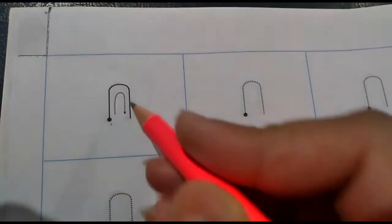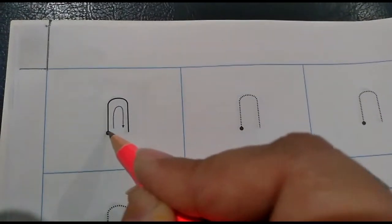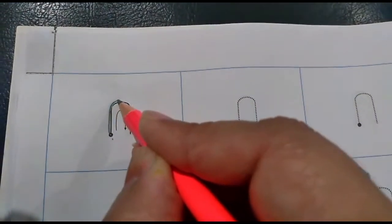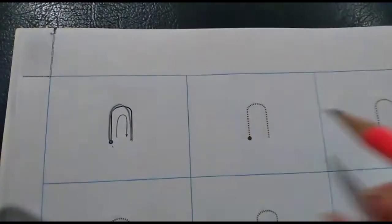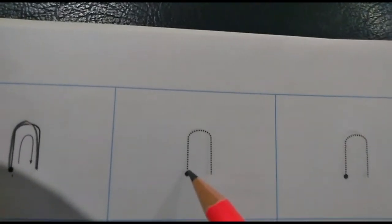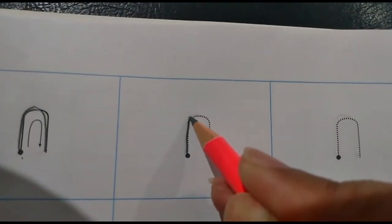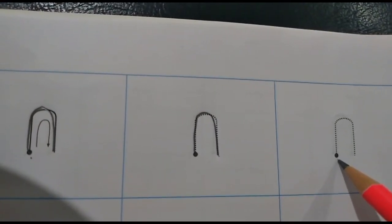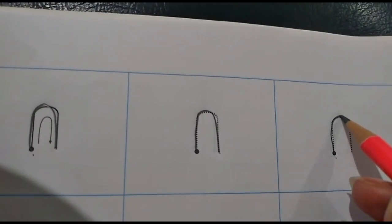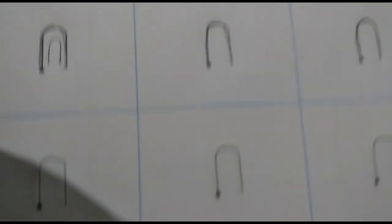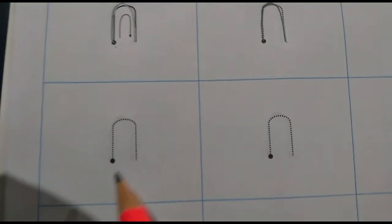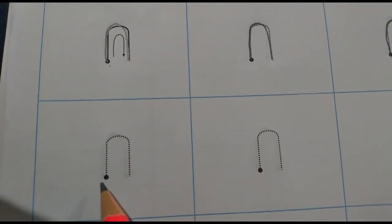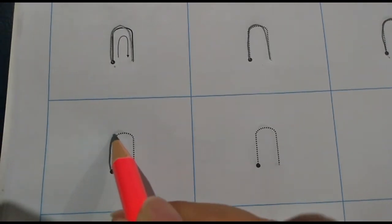Now let's start. You are going to start from this dark dot, can you see? We will start from here, we will go up, bumpety, and come down. Again you will start from the dark dot, we will go up, bumpety, and down. Come on, start from the dark dot, go up, bumpety, and down.